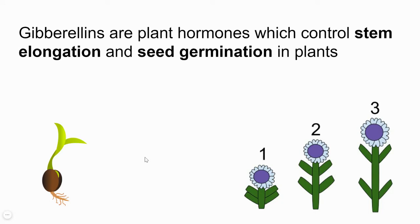Gibberellins are plant hormones and they control two main functions in plants. One is they control the seed germination, and they also play an important role in the stem elongation of the plant.